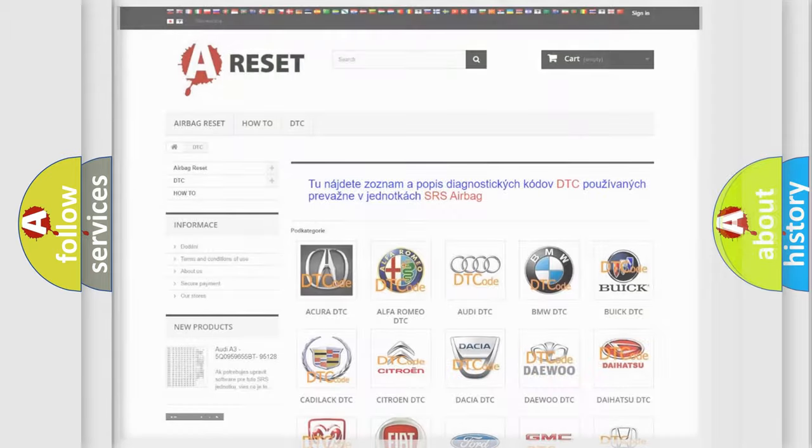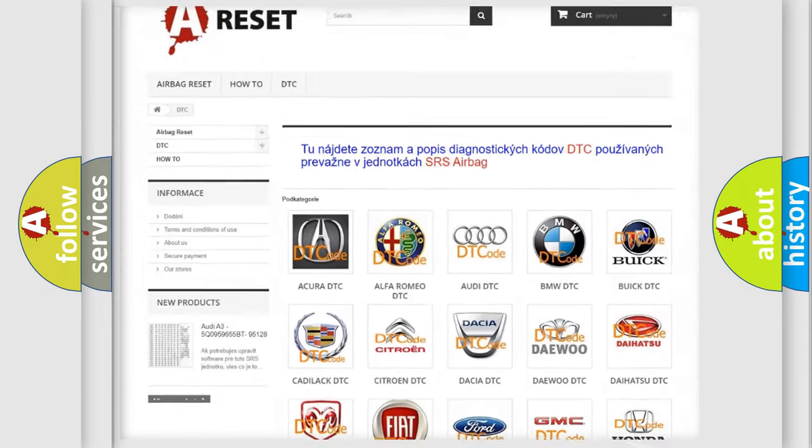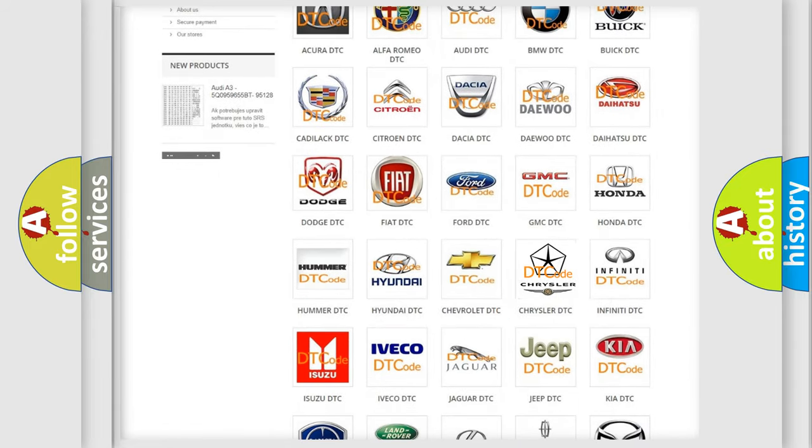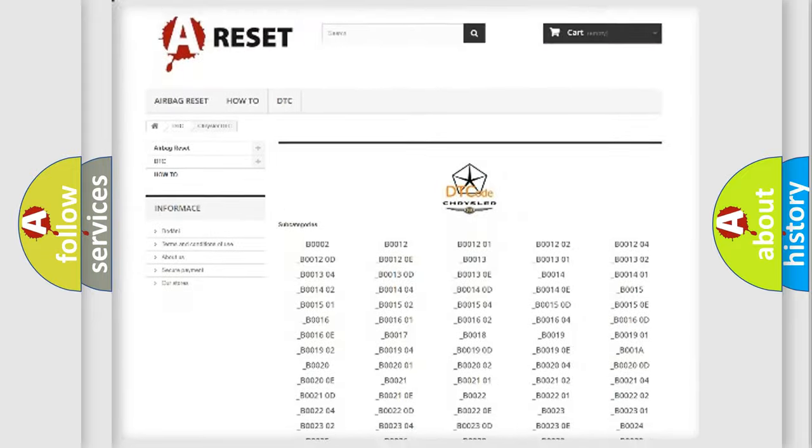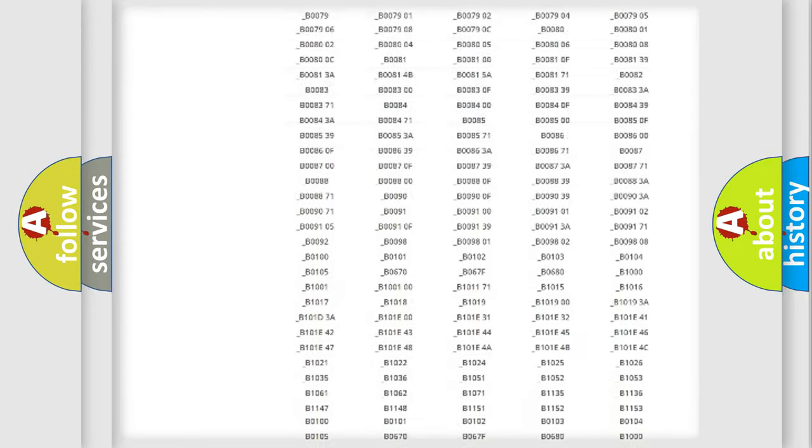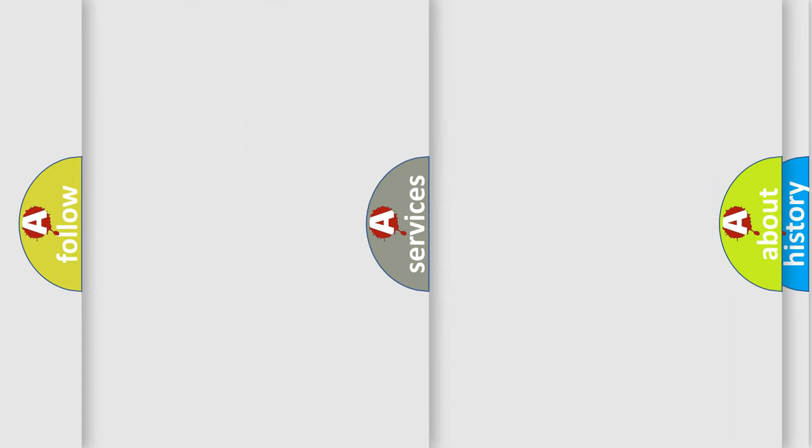Our website airbagreset.sk produces useful videos for you. You do not have to go through the OBD2 protocol anymore to know how to troubleshoot any car breakdown. You will find all the diagnostic codes that can be diagnosed in Chrysler vehicles. Also many other useful things.